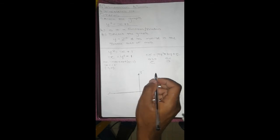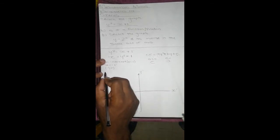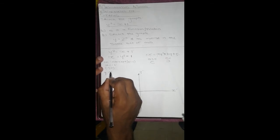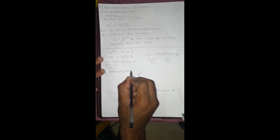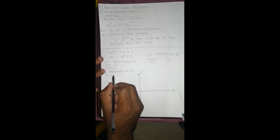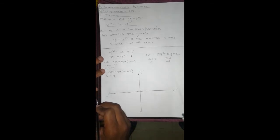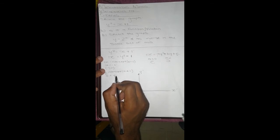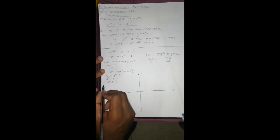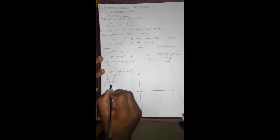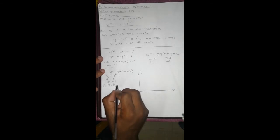Our y-intercept, where x equals 0, is going to be 0 equals y squared minus 1. Y squared equals 1, therefore y equals plus or minus 1. So our y-intercepts are going to be 0, minus 1 and 0, 1.